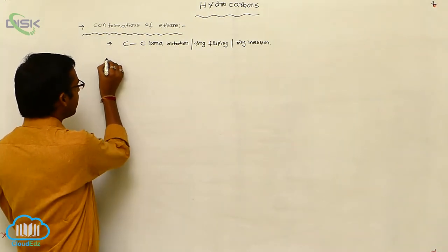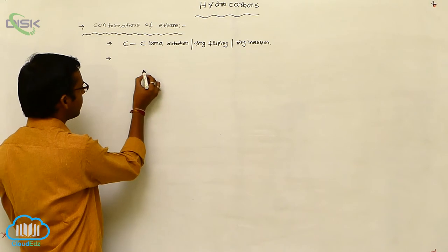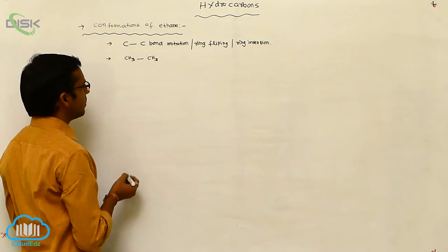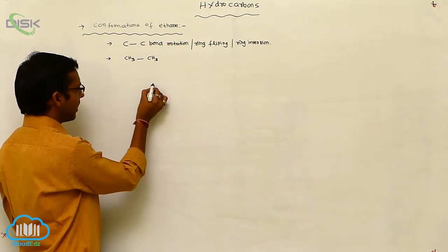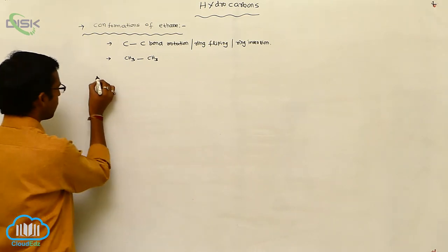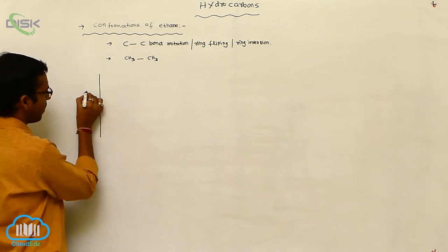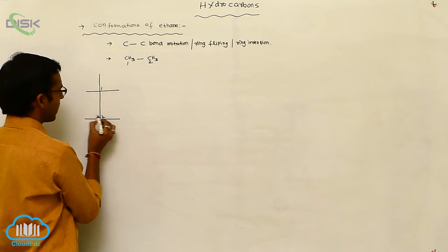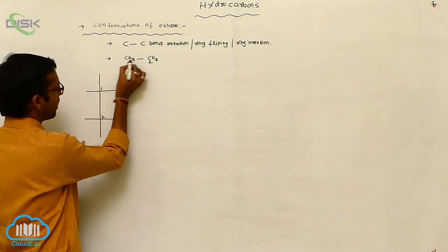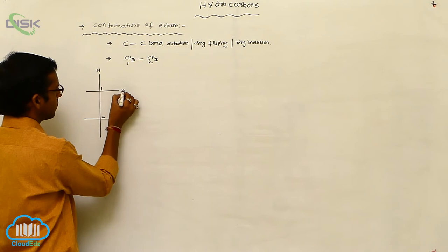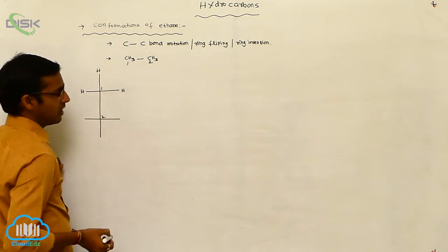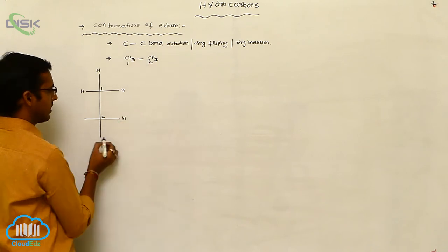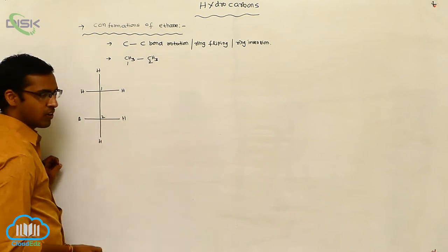The ethane structure is CH₃–CH₃. In Fischer projection formula, this is your first carbon and this is your second carbon. The first carbon contains three hydrogens, and the second carbon also contains three hydrogens. This is your Fischer projection formula.